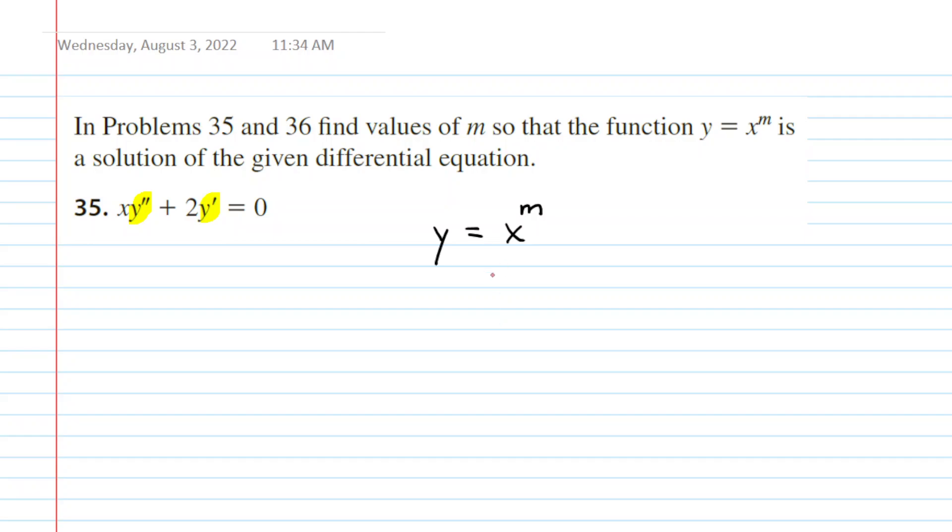As noted, this is a power function, so we simply apply the power rule to compute the derivative. For y prime, we multiply m by the initial coefficient, which is just one. So m times one is m, and then we have x to the power of m minus one. We always subtract one from the power using the power rule.